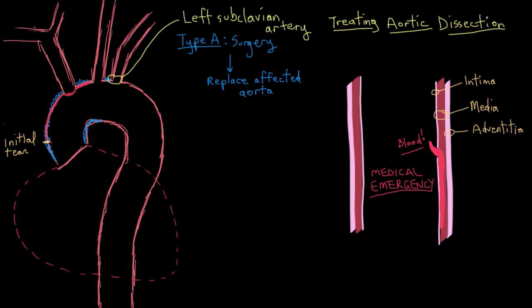When that happens, what you end up with is this flap of intima that has been torn away from the media in the aorta wall — the intimal flap — with blood behind it between the intimal flap and the media. On the outside, on the other side of the blood, you have both the media and the adventitia. What the surgeons will do is replace the affected part of the aorta with a graft. All this diseased aorta gets cut out.